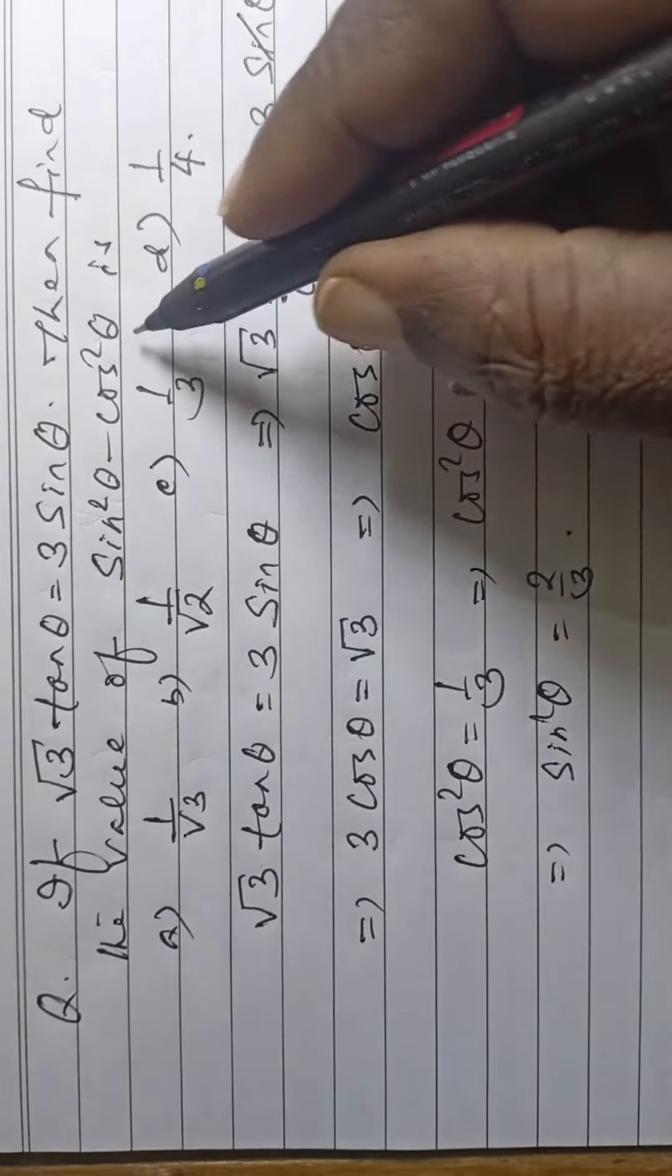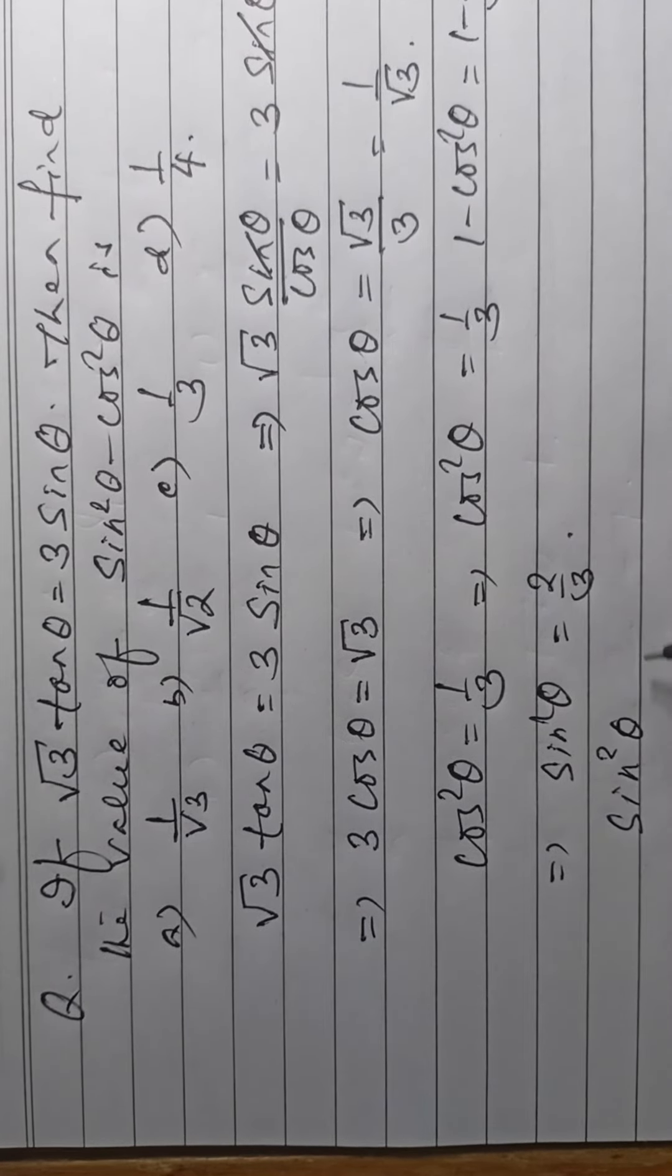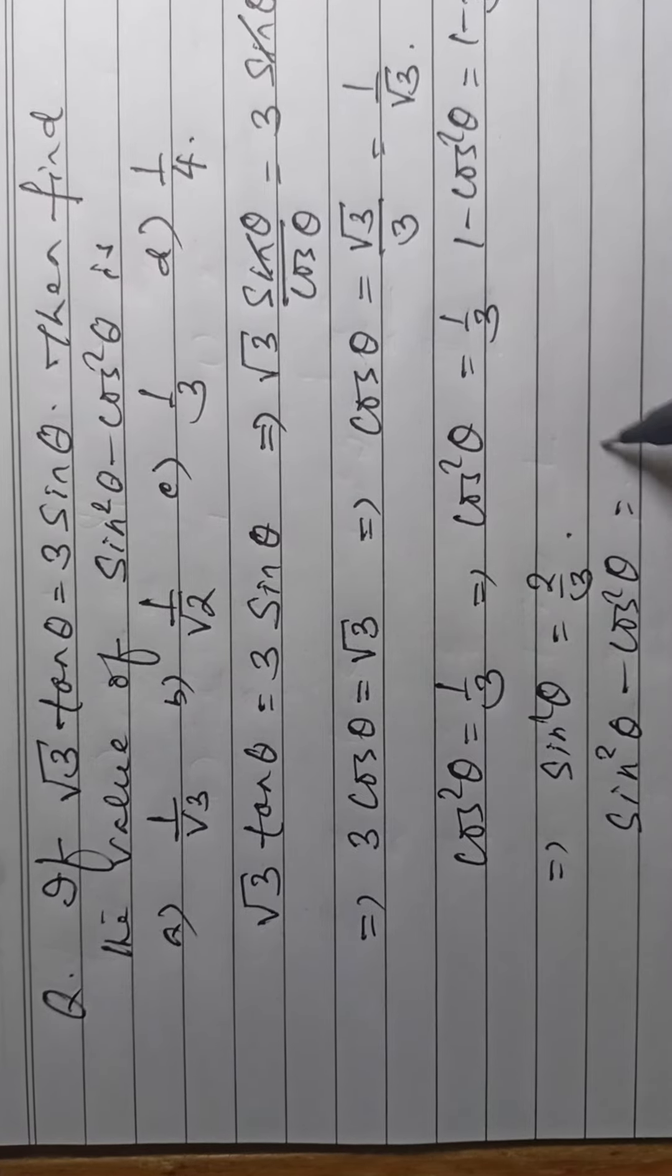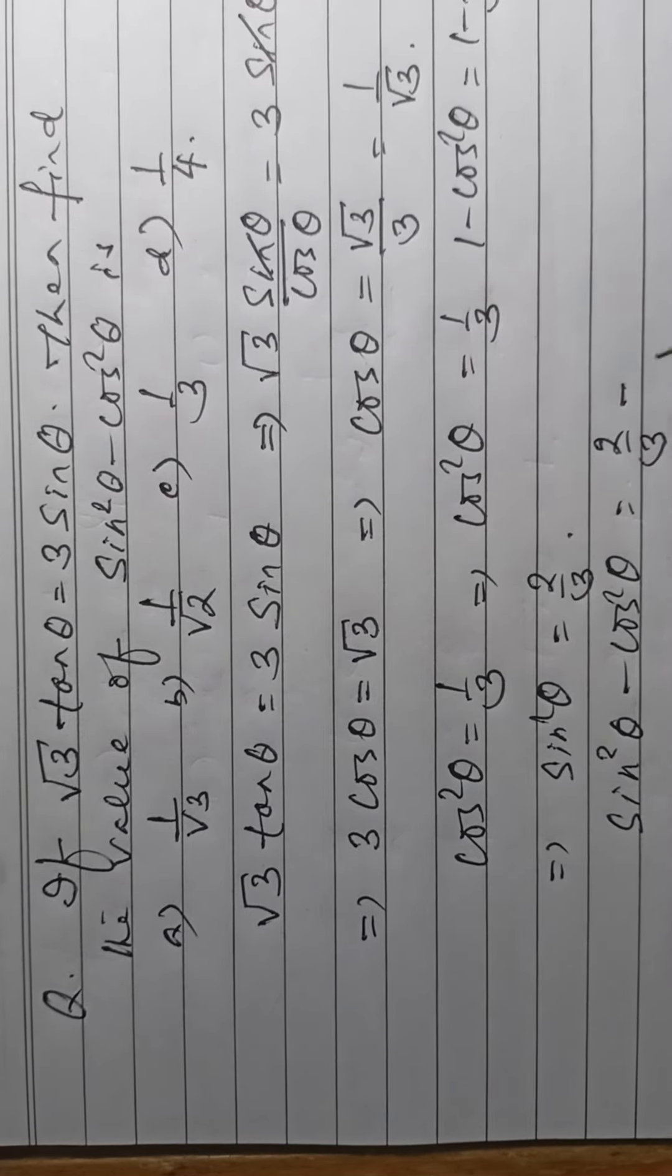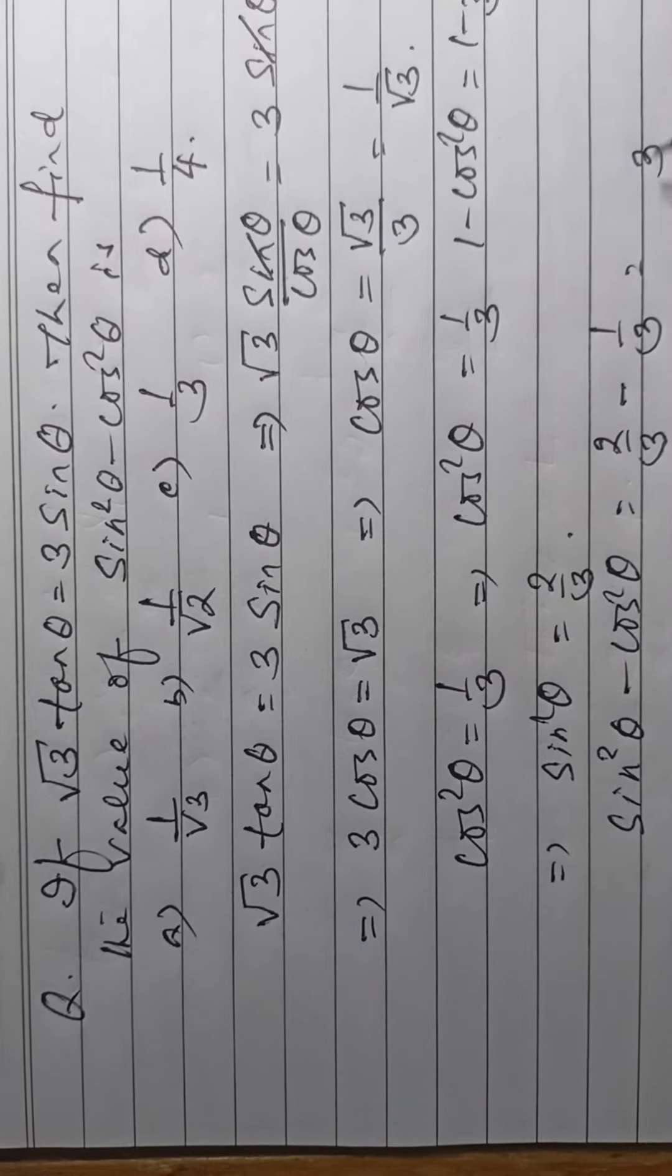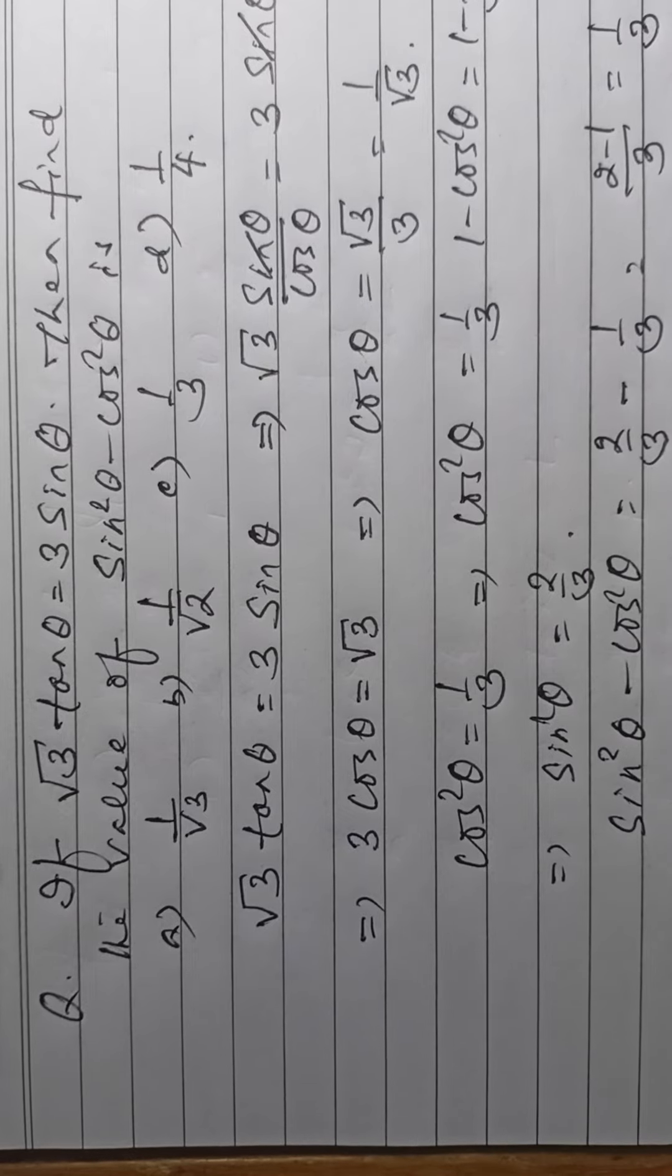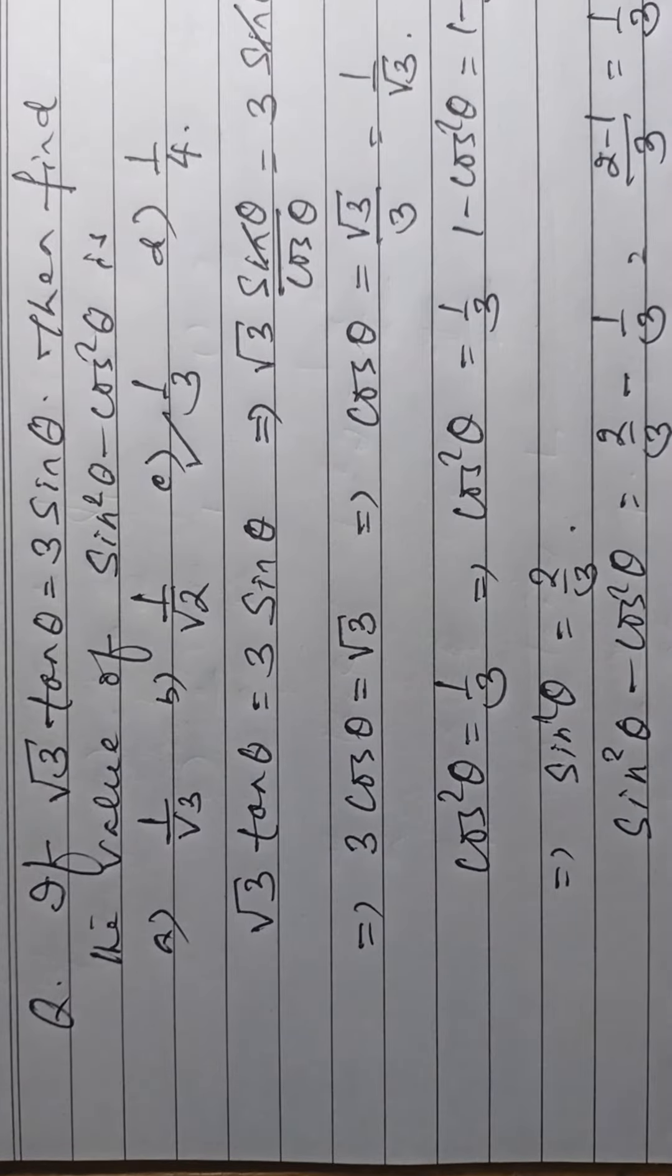Putting in the question, sin square theta minus cos square theta means 2 by 3 minus 1 by 3. 3 is the LCM, 2 minus 1, that is 1 by 3. So, option C is the correct answer.